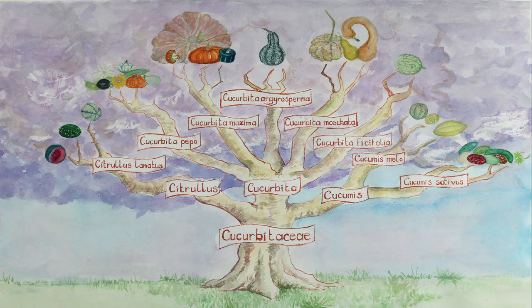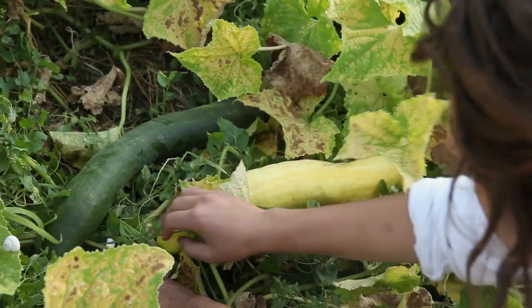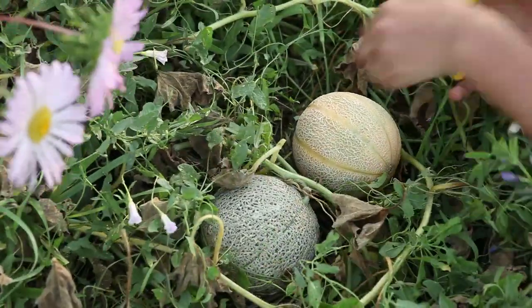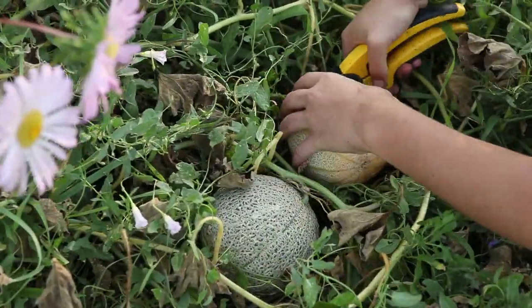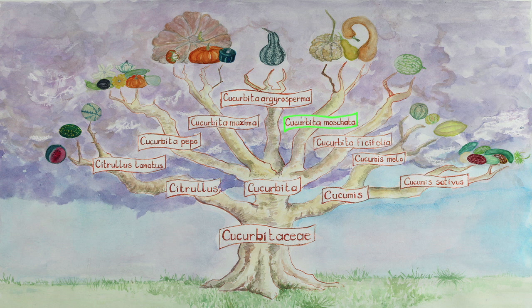Most of the time, varieties from different species cannot cross. For example, there is no risk of a cucumber crossing with a melon. But there are exceptions — crosses are possible between species that are botanically close, such as between the Cucurbita moschata species and the Cucurbita argyrosperma species.